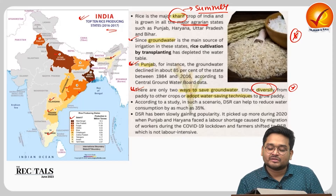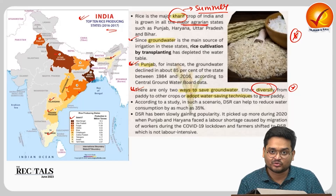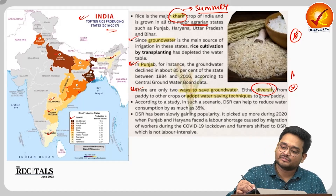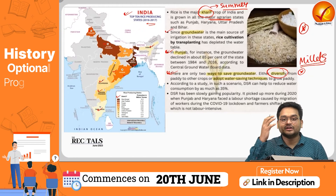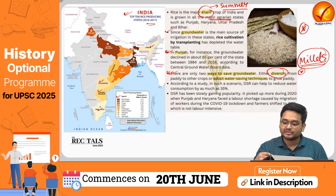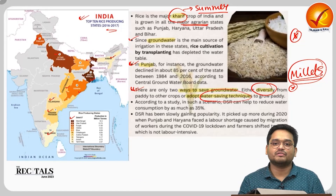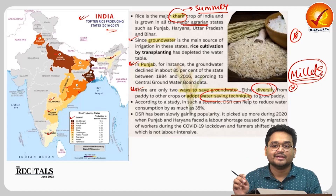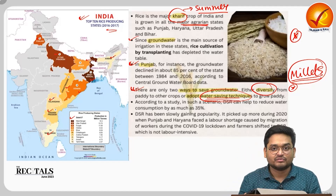Since rice cultivation uses huge amounts of groundwater, there are two key solutions. First, we can diversify from crops that require too much water to crops requiring less, such as millets, which also happen to be more nutritious than rice. Second, we can adopt water-saving techniques, and this is where the Direct Seeding of Rice, or DSR method, comes in as an innovative way to reduce water requirements.